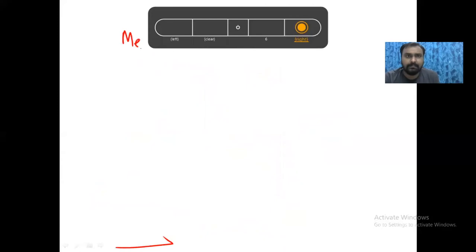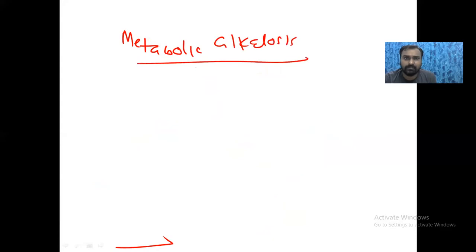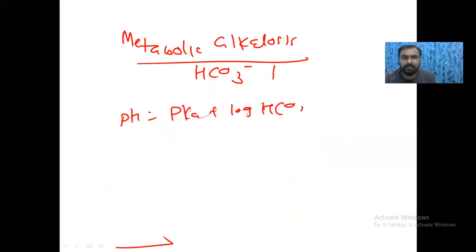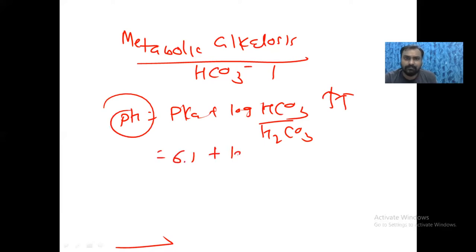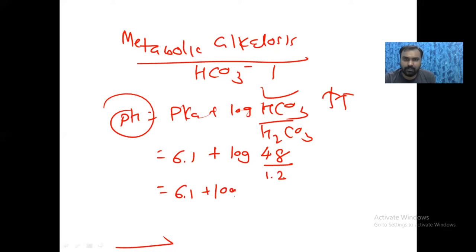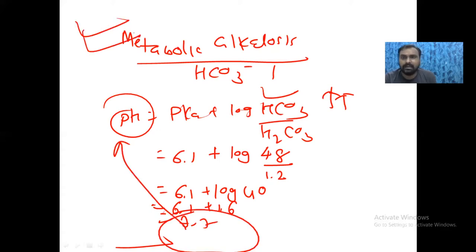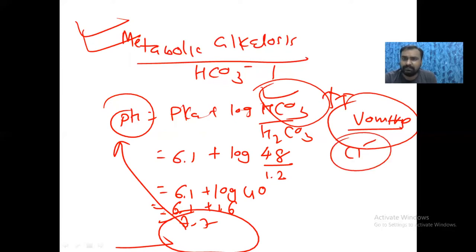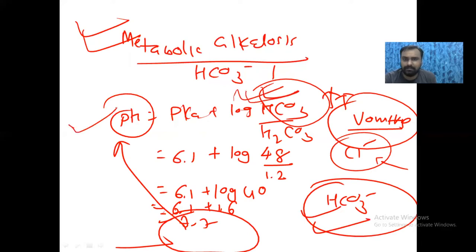The last condition is metabolic alkalosis. Here bicarbonate is affected. Any condition that increases bicarbonate level will increase the pH. For example, if bicarbonate increases from 24 to 48 with H₂CO₃ at 1.2: pH = 6.1 + log(48/1.2) = 6.1 + log(40) = 6.1 + 1.6 = 7.7. Conditions causing increased bicarbonate include GI obstruction with vomiting, where chloride is lost along with H⁺, so bicarbonate rises to maintain neutrality. Ingestion of alkaline substances also leads to metabolic alkalosis.